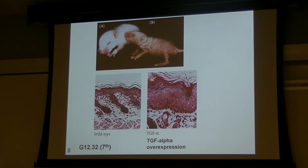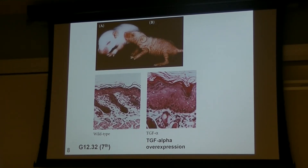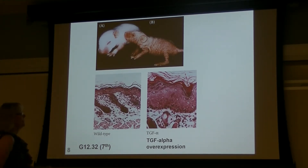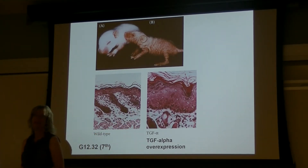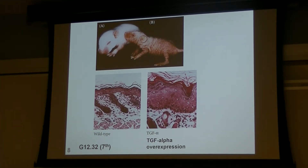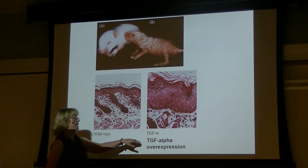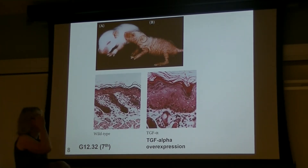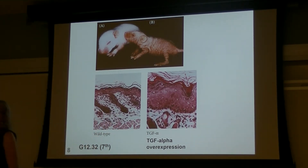This slide shows what happens if a mouse is over-expressing TGF-alpha. Over-expression means too much of this gene product is being made. In this case, the keratin promoter was placed in front of TGF-alpha and introduced into the mouse. With keratin driving TGF-alpha, you get loads and loads of TGF-alpha expression. The basal stem cells start dividing rapidly, and this ends up with a massive accumulation of cornified cells on the outside.